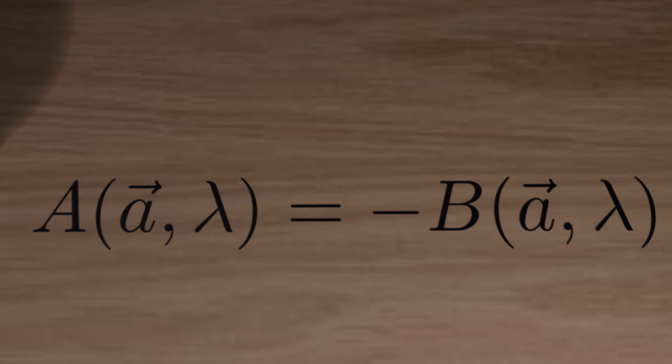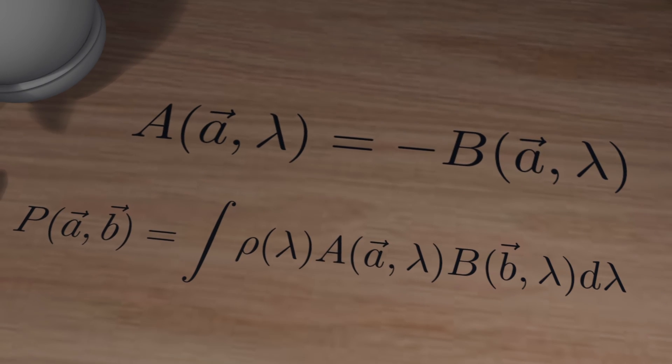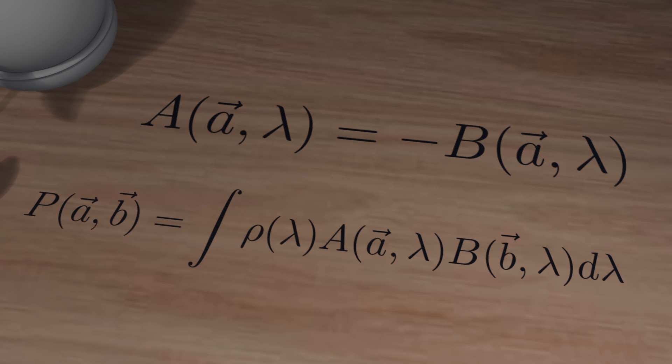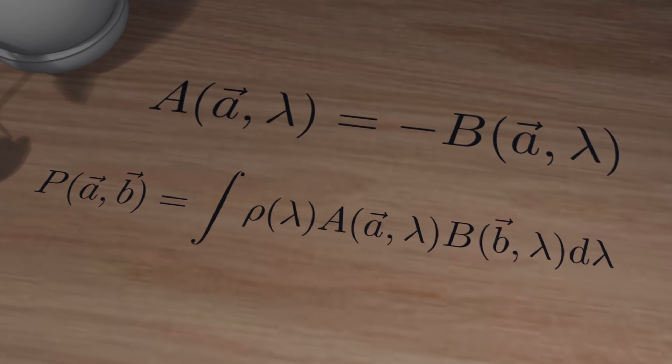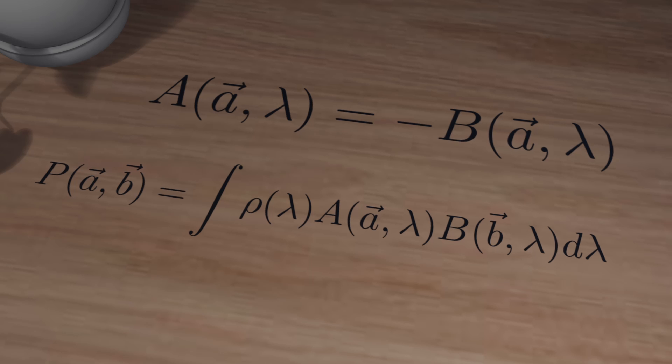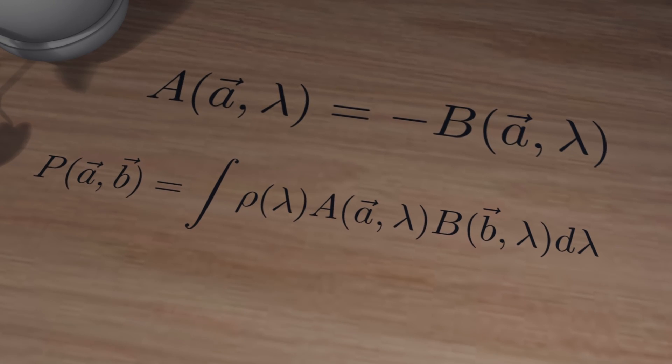We can now average the product of the measurements, which by definition, is the integral of the function times its probability density function, or PDF for short. To be clear, this is the average outcome of the product of the measurements.